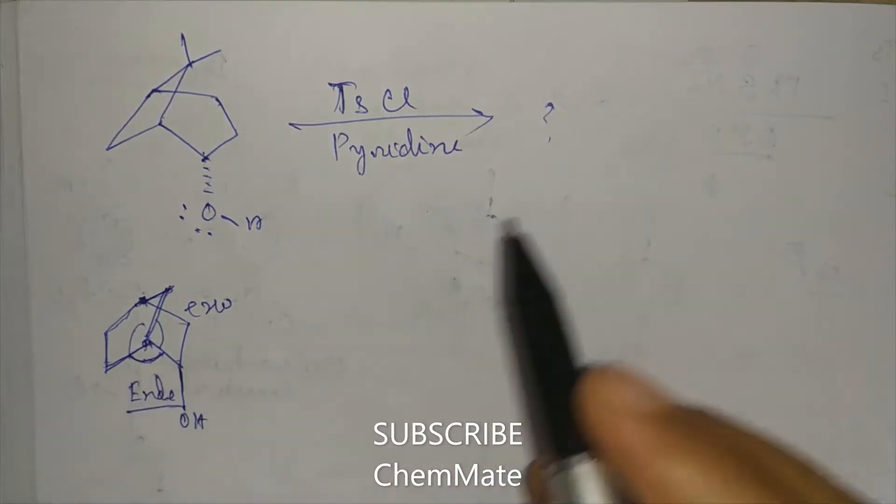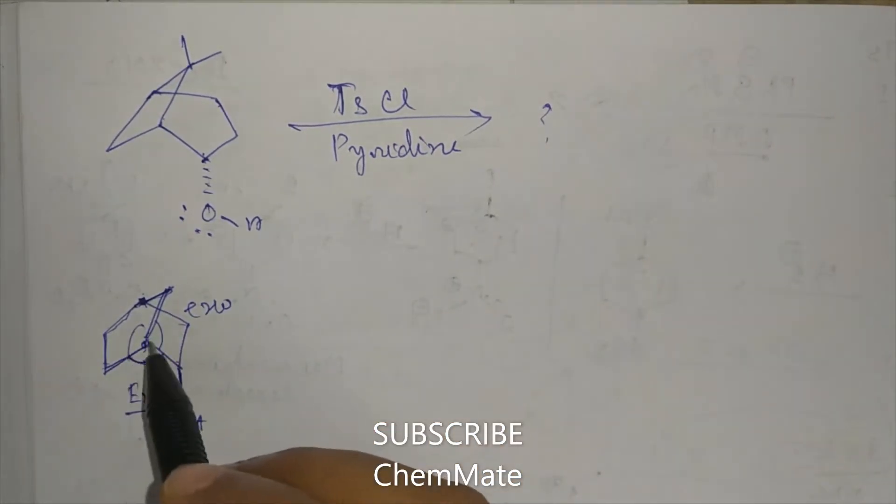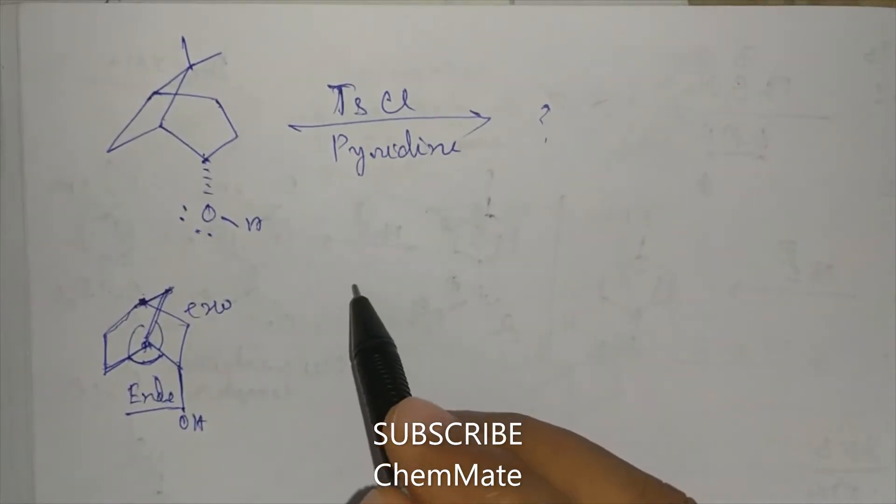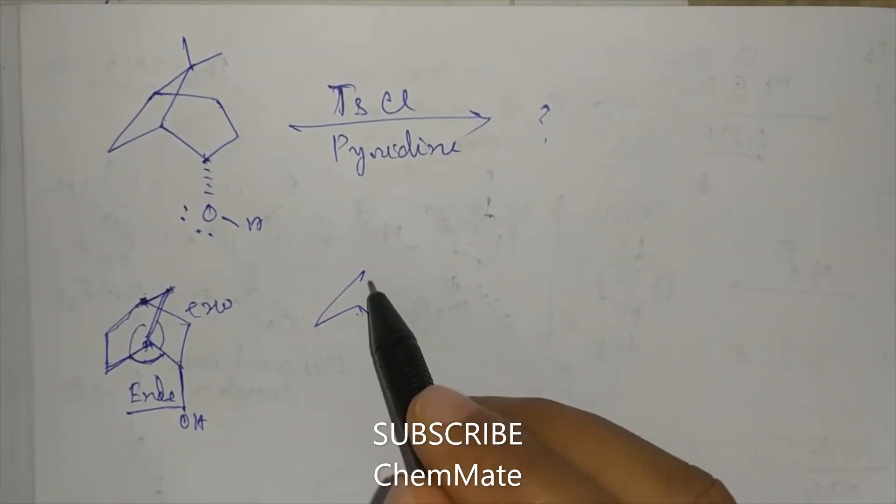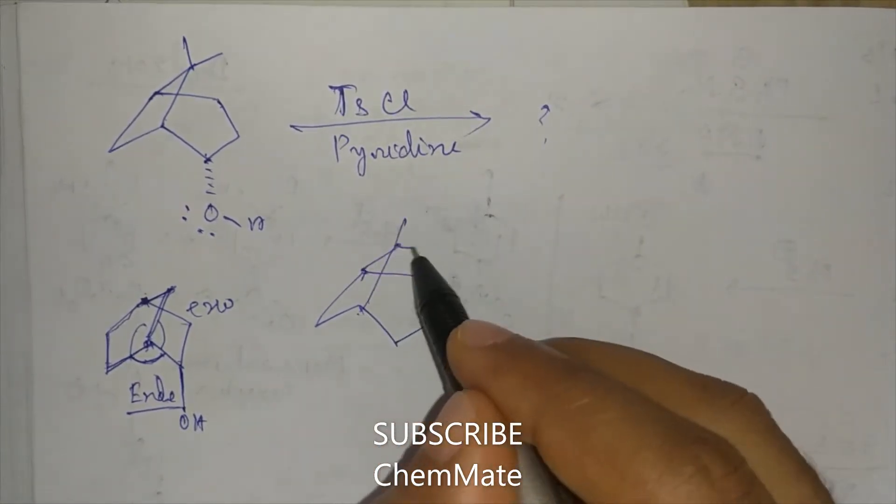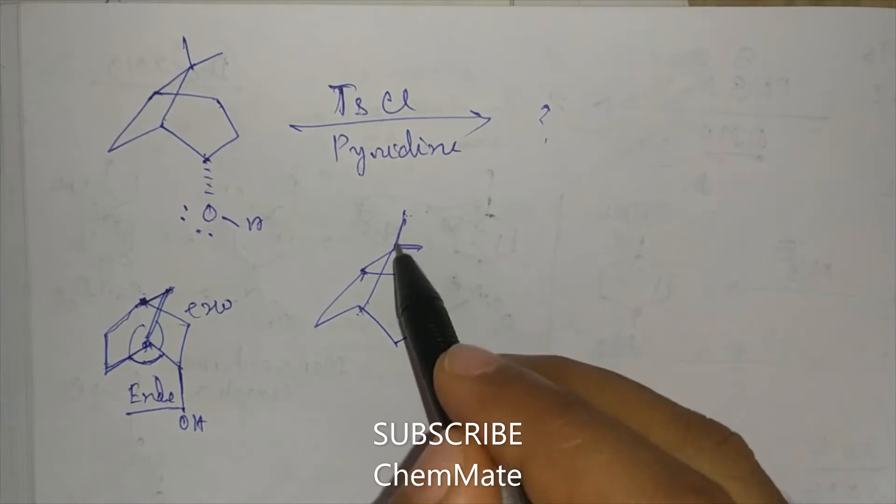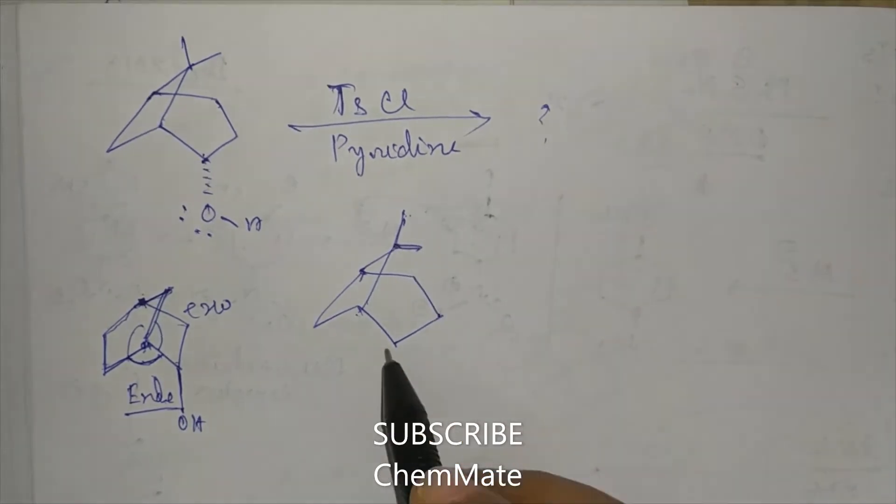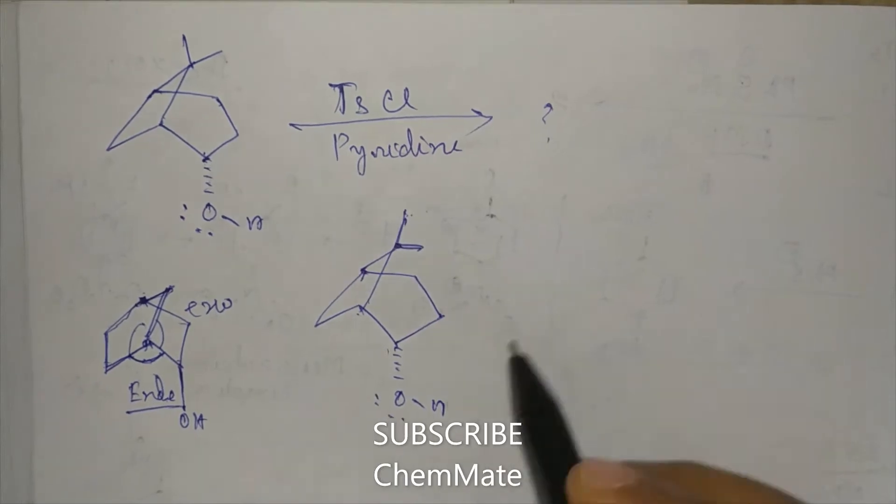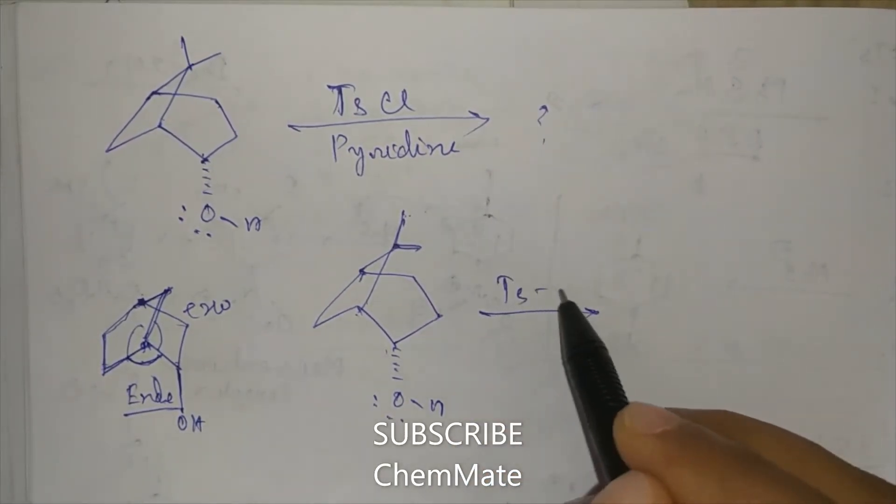Now this is another compound I am taking. In this compound, same as two methyl groups are here in bridged carbon. So OH is in endo, and if it is treated with tosyl chloride...